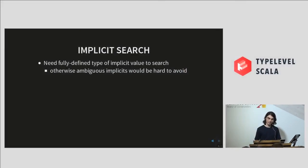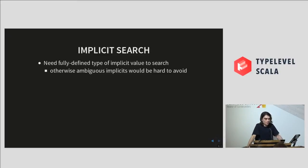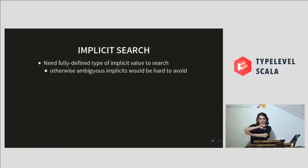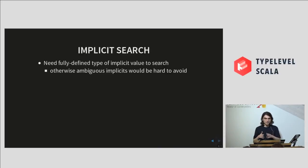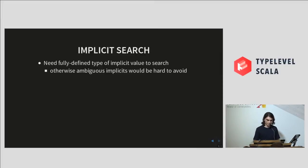The last interesting case is implicit search. In Dotty, the way it works is that we need fully defined types before doing an implicit search. If you don't have them, you get weird stuff like ambiguous implicits, because you have to look into the lower and upper bounds of your type parameters and you get too many implicits. It would also be too slow and not user-friendly.